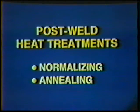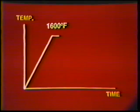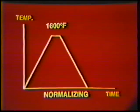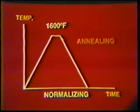Post-weld heat treatments, such as normalizing or annealing, can also restore ductility to a weld produced on medium carbon steel. This involves heating the weldment to a temperature in the area of 1600 degrees Fahrenheit, and then cooling in still air for normalizing or cooling in a furnace for annealing.